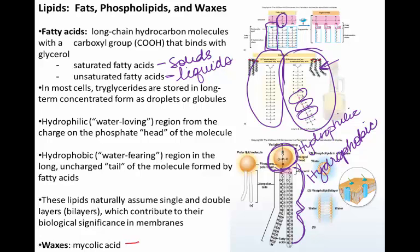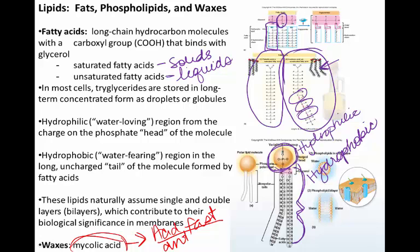Waxes — we've already spoken about these. Mycolic acid found in Mycobacterium, the bacteria causing leprosy and tuberculosis, made these organisms particularly difficult to stain — these are the acid-fast bacteria. That mycolic acid coating is anti-phagocytic; it gave TB bacteria the ability to live inside a macrophage. The organisms can be engulfed but will never actually be digested during phagocytosis.